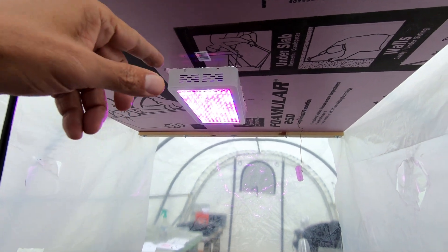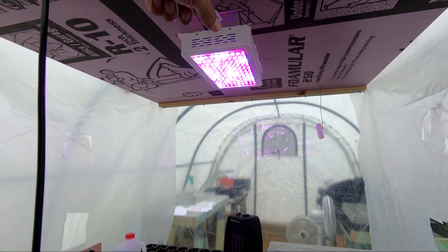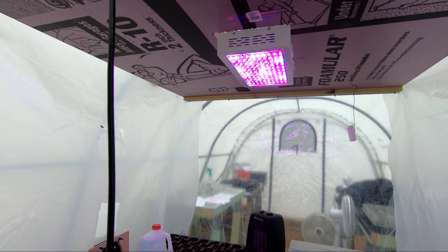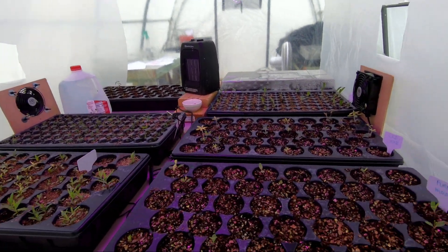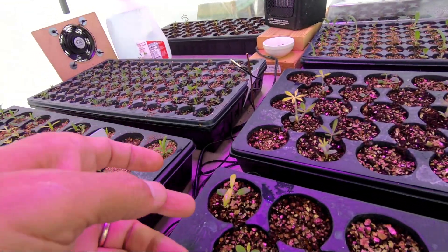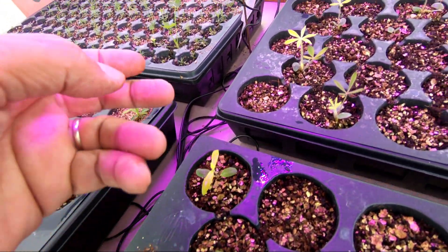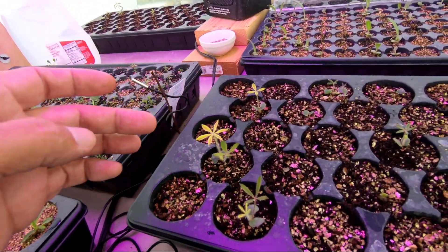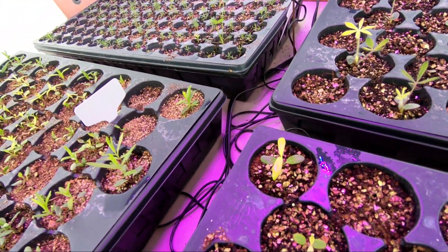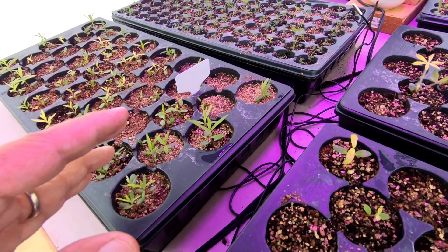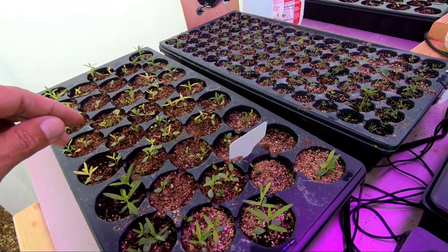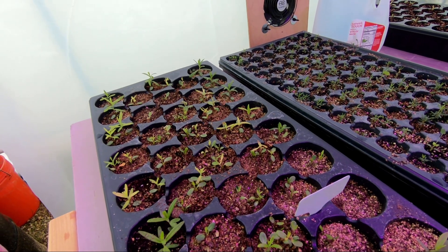I moved the lights up to 30 inches, or actually right about 32 inches, because of this yellowing which I had no idea what it was. Generally you don't get yellowing like this on seedlings unless they're waterlogged or you have some kind of nutrient deficiency.